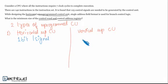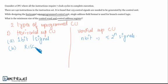In vertical microprogrammed control, multiple signals can be encoded using fewer bits. Horizontal is used in RISC architecture. Vertical is used in CISC architecture.